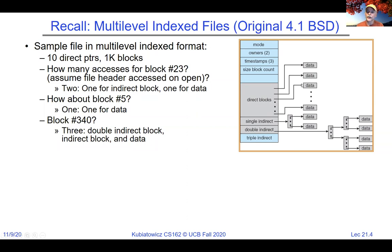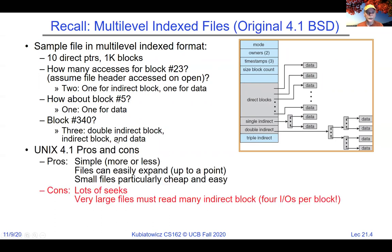You should be able to do block number calculations on a test. Block number five is a direct block (0 through 9 are direct). Block 340: the first 10 are direct, the next 256 are in the singly indirect, so 266 total. Block 340 is larger than 266 and not large enough for triple indirect, so it's in the doubly indirect range.